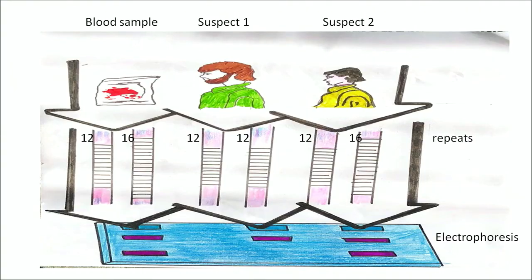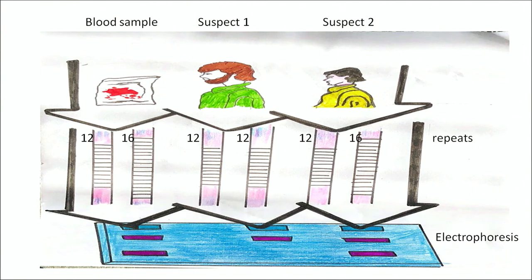This example shows how we can determine who is a suspect at a crime scene. A blood sample is collected from the scene, and we have suspect 1 and suspect 2. We run the DNA extracted from the blood sample on gel electrophoresis - in the first set, two red bands are formed. We also run the DNA from suspect 1 and get only one band. Then we run the DNA from suspect 2, and as we can see, the DNA sample of suspect 2 matches with the DNA sample collected from the crime scene. So we can ascertain that suspect number 2 is the person who committed the crime.